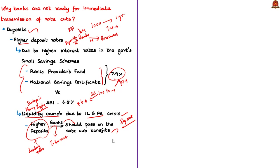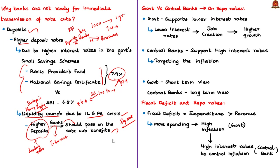Governments generally support lower interest rates because lower borrowing costs reduce project expenses, encouraging investment, job creation, and higher growth. Central banks, however, worry that lower rates increase money supply and liquidity, leading individuals to purchase more goods and services, which drives up demand and ultimately causes inflation — a rise in prices.